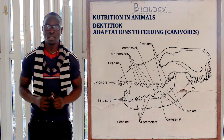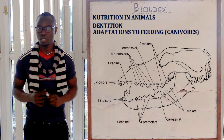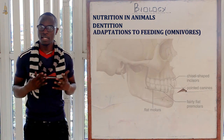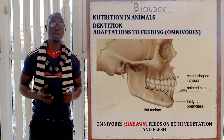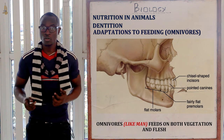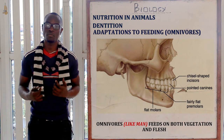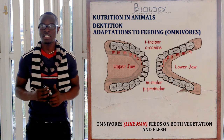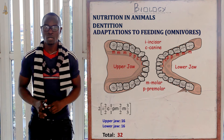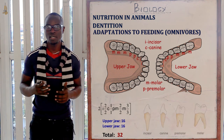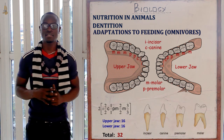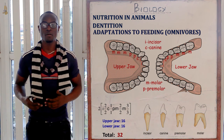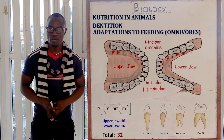Once the teeth of carnivores are broken, there is no regrowth — they are permanent. Looking at dentition in omnivores, these are organisms that feed on both vegetation and flesh. The adaptations of their teeth include chisel-shaped incisors, bluntly pointed canines that are poorly developed compared to carnivore organisms.